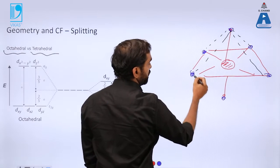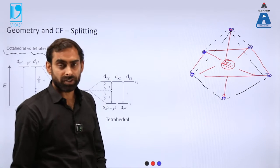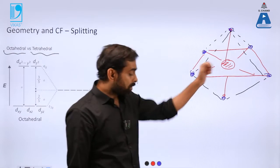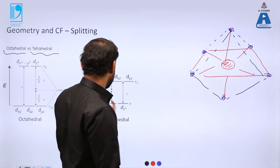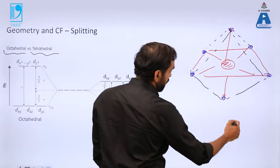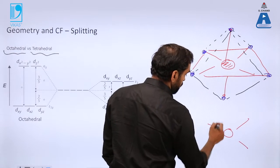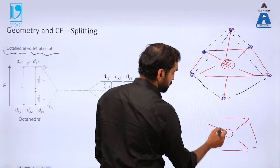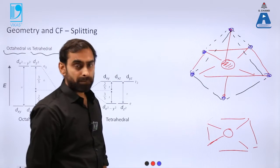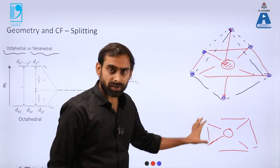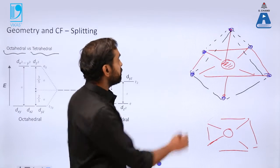Whereas in case of a tetrahedral geometry, there will be only four ligands which will be connected to a metal ion. So you can say if it's only like this in one plane, this is planar geometry, rectangular or planar geometry.